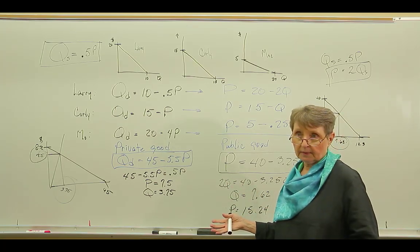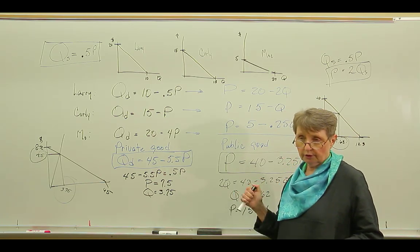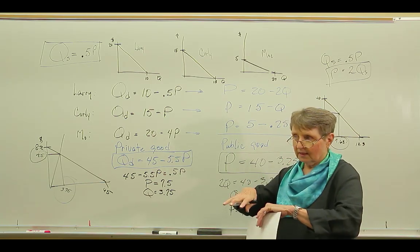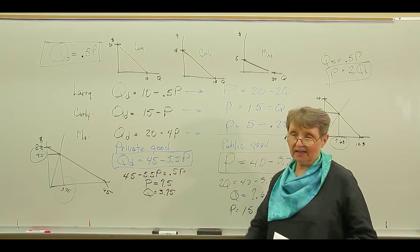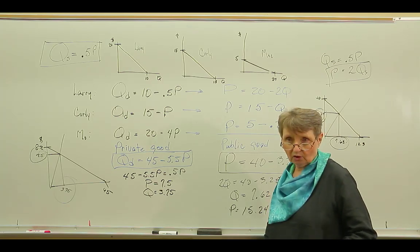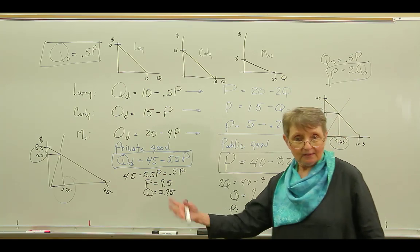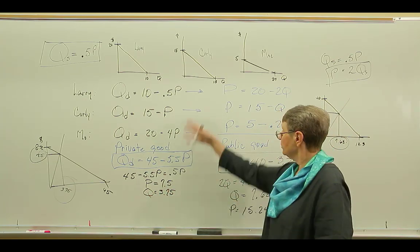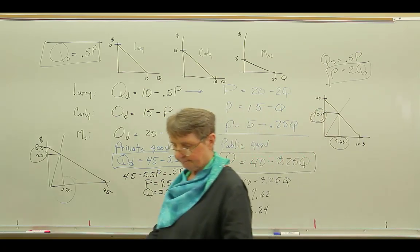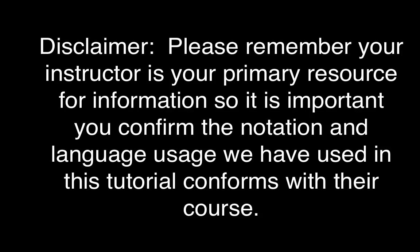Public goods are big problems. And we often get an overproduction of public goods because the cost of the public good is going to be shared. If somebody else is going to pay for it, I'm having steak. If I'm paying for it, it's hot dogs. So anyway, that's the difference between public good and a private good using the simple algebra. Okay. Thank you.